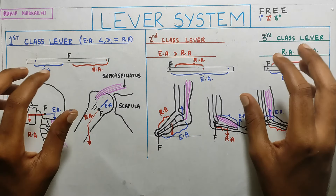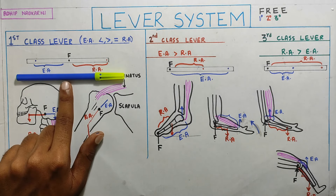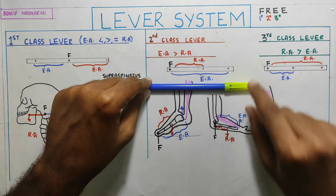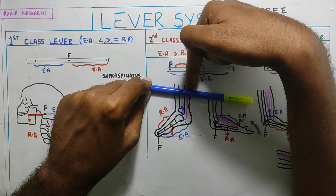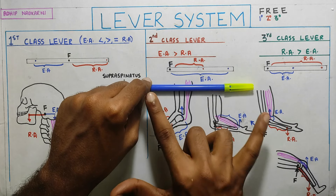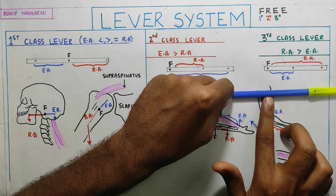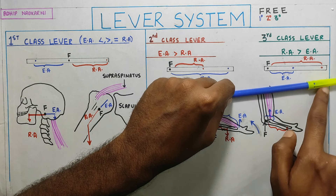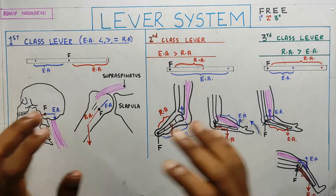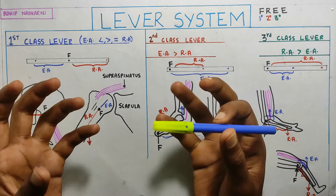So those are the three lever systems. On a normal lever, for first class the fulcrum is in the center with effort and resistance arms on either side. For second class, the fulcrum is at one end, resistance arm is closer to the fulcrum and smaller, and effort arm is bigger. For third class, effort arm is pushing close to the fulcrum so it's small, and the resistance arm is big. Now let's see how these appear in our body.